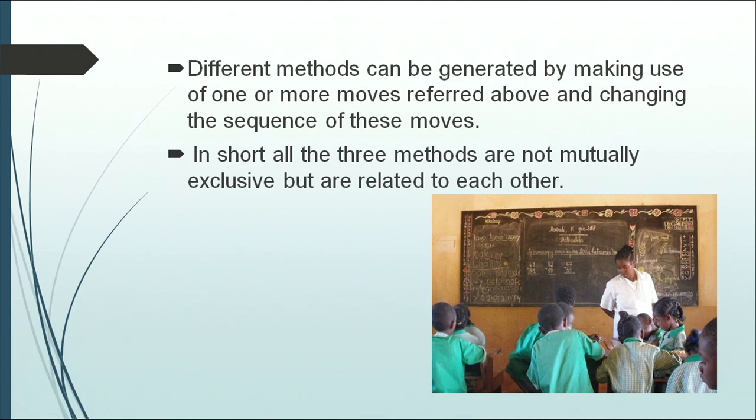Different methods can be generated by making use of one or more of the moves referred to above and changing the sequence of these moves. All three methods are not mutually exclusive but are related to each other. What are the three methods? We have discussed the expository method of teaching, then there is a discovery method, and then there is a new method called the 5E model or 7E model which we will be discussing in the next classes.